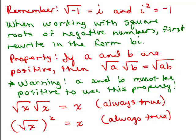Warning: a and b have to be positive to use this property. And lastly, if you have the square root of x times the square root of x, it's always x. It really doesn't matter if x is positive or negative — this will always be true. Another way of writing the same thing is the square root of x, quantity squared, which also equals x.